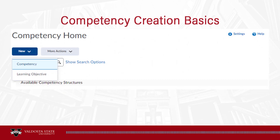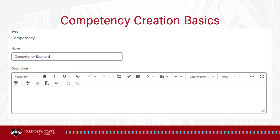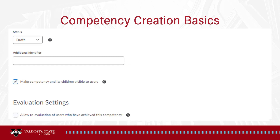First you'll create a new competency, so select New and select Competency. On the new competency page, enter the name of the competency. You may add a description of the competency if you wish. Next, leave the status in draft for now, but make sure you return to publish it later. Add additional identifiers if needed, and decide if you want the competency and its children visible to users — this is highly recommended. Decide if you want to allow reevaluation once the competency is achieved; if not selected, students who have achieved the competency cannot be reevaluated. Once these settings are complete, click the Save button.